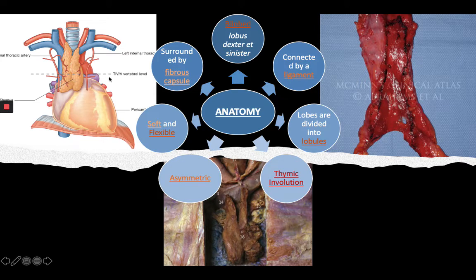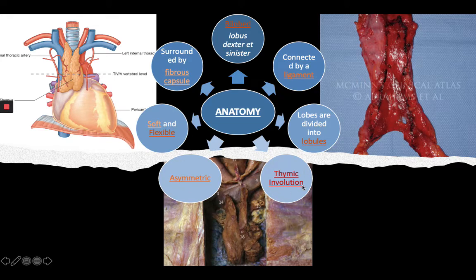It's surrounded by a fibrous capsule, and this capsule will penetrate into the thymus. The lobes are further subdivided by connective tissue into lobules. What's very interesting is the phenomenon called thymic involution.